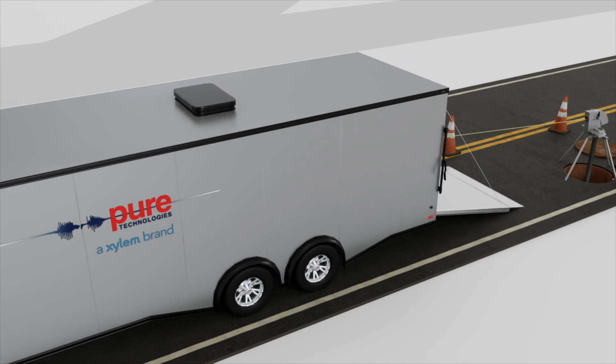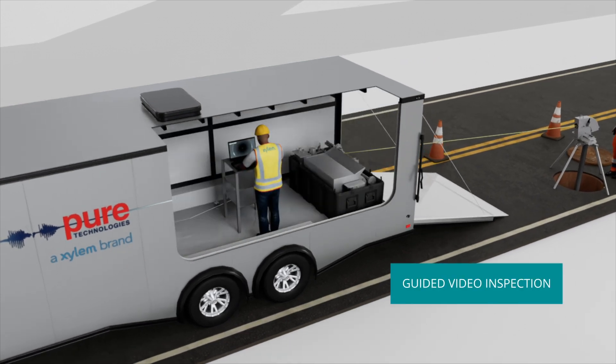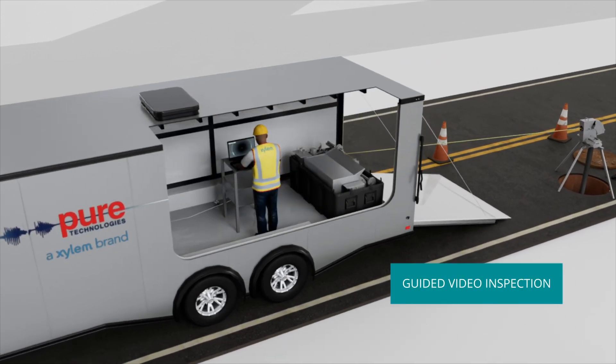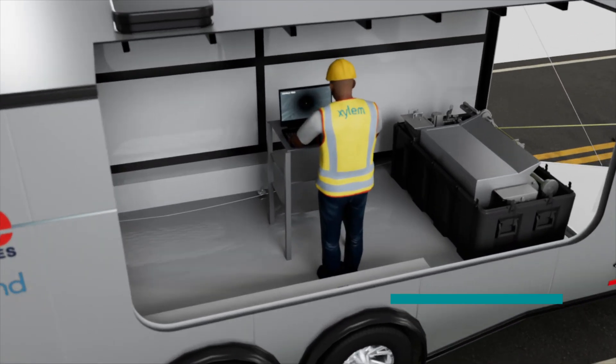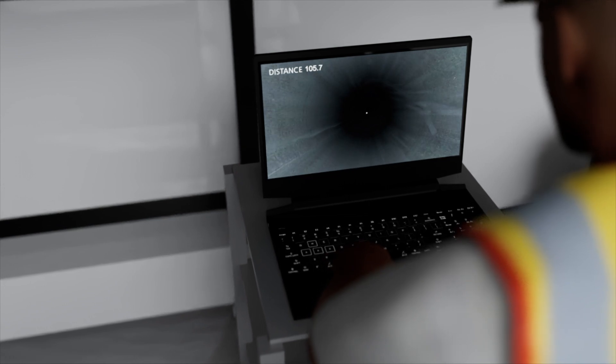The tool's live video feature helps utilities identify visual defects inside the pipeline, including debris, cracks, deteriorated joints, and pipeline features like valves and unknown connections.